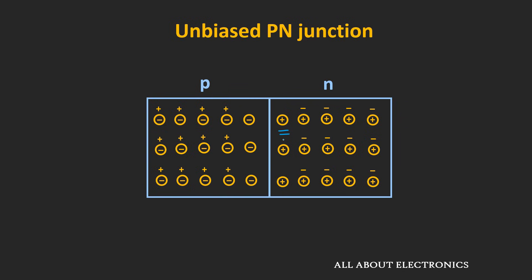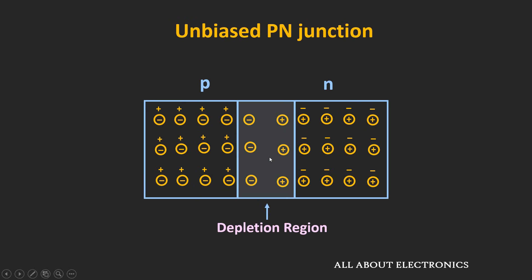These ions are immobile, and unlike free charge carriers like electrons and holes, they cannot move. Due to the recombination of holes and electrons near the junction, there are hardly any free charge carriers near this junction. We can say that this junction is depleted from free charge carriers, and this region is therefore also known as the depletion region.